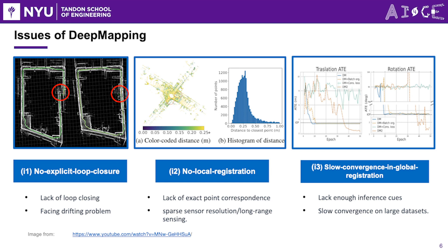Second, no local registration. DeepMapping only utilizes ICP for pose initialization, but not in the optimization process. This limitation arises from the scarcity of point correspondence in LiDAR point clouds. Due to the sparse sensor resolution and long-range sensing, it is uncommon for the same 3D point to appear again in another scan.